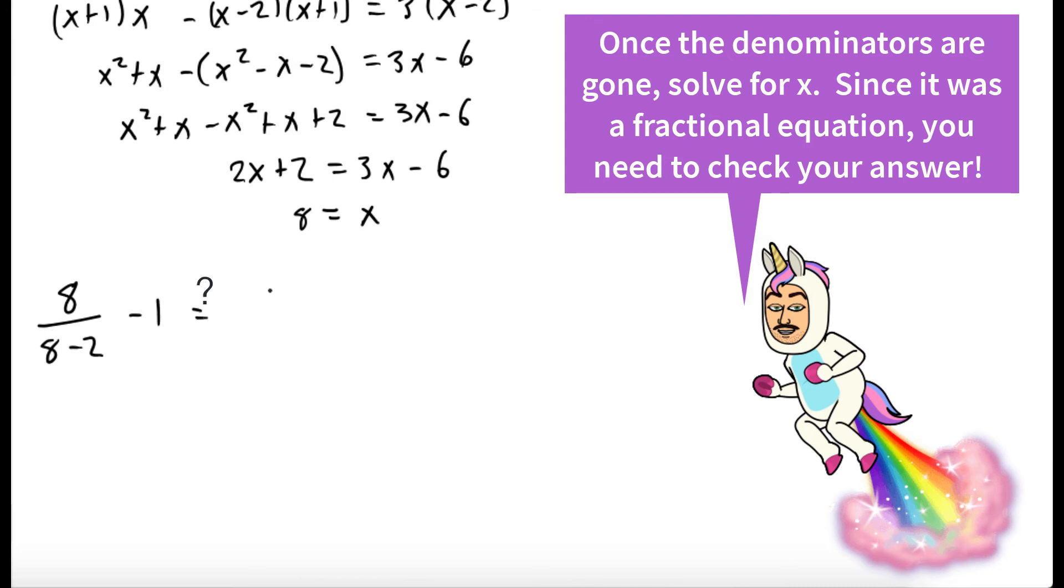So is it true that 8 over 8 minus 2 minus 1 is equal to 3 over 8 plus 1? Well, let's work it all the way out. Suppose we don't have a calculator. 8 sixths minus 1, is that equal to 3 ninths?